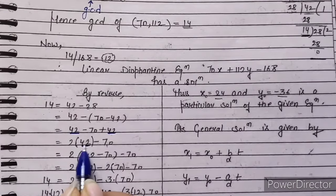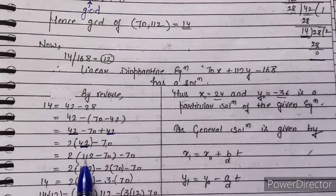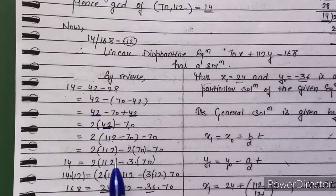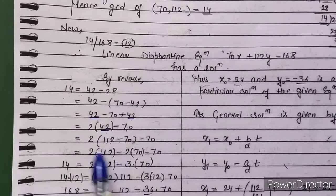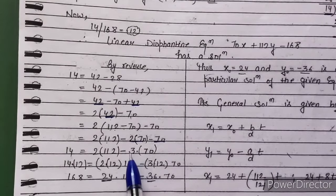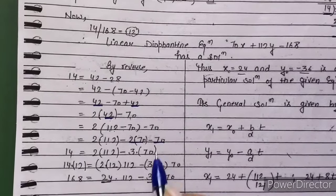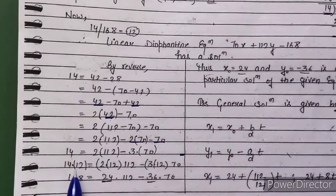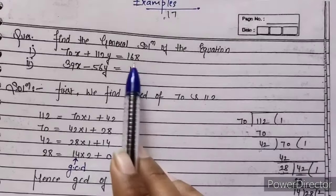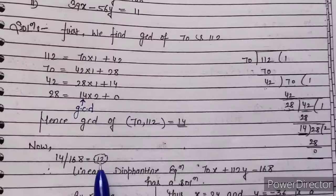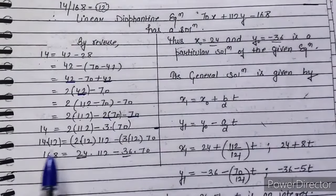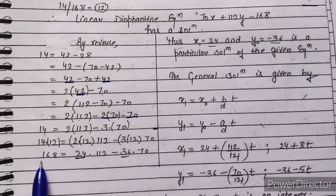Now substituting the value of 42: since 112 equals 70 times 1 plus 42, we have 42 equals 112 minus 70. Substituting: 14 equals 2 times (112 minus 70) minus 70 equals 2 times 112 minus 2 times 70 minus 70 equals 2 times 112 minus 3 times 70. Now multiplying both sides by 12, since 14 times 12 equals 168 which is our c value: 168 equals 24 times 112 minus 36 times 70.